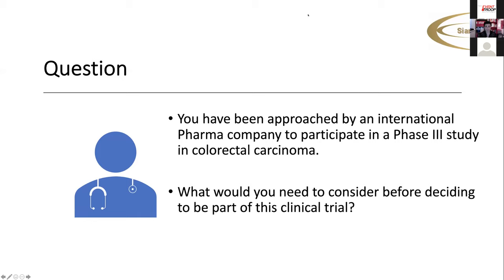Another question: what is exactly the difference between PP and ITT population, and which group results will be more credible? PP is per protocol definition; ITT is intention to treat. You have to look at the protocol as to how they're identifying it. For example, intention to treat may include whoever signed the consent form. A per protocol definition might be those who've completed a certain number of cycles of treatment. It really depends on how the sponsors are going to handle the statistics, and what's documented in the SAP - the statistical analysis plan - which is part of the protocol.